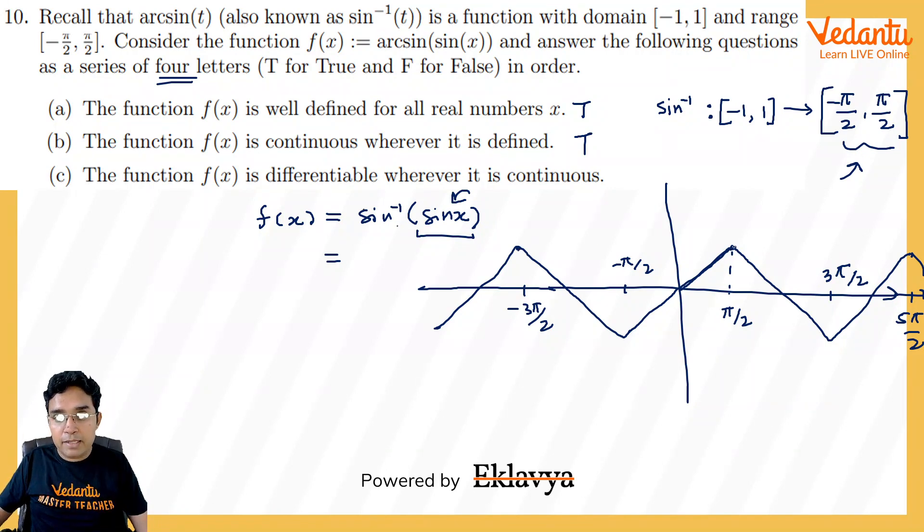But these points where it takes sudden turn will become non-differentiable. So the function f(x) is differentiable wherever it is continuous—this statement seems to be false. So it will be T, T, F. This is how this will be done, dear.